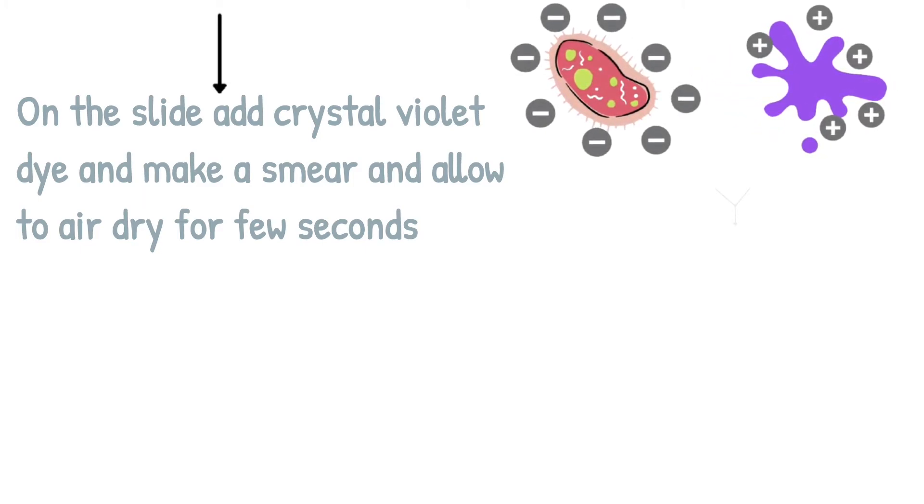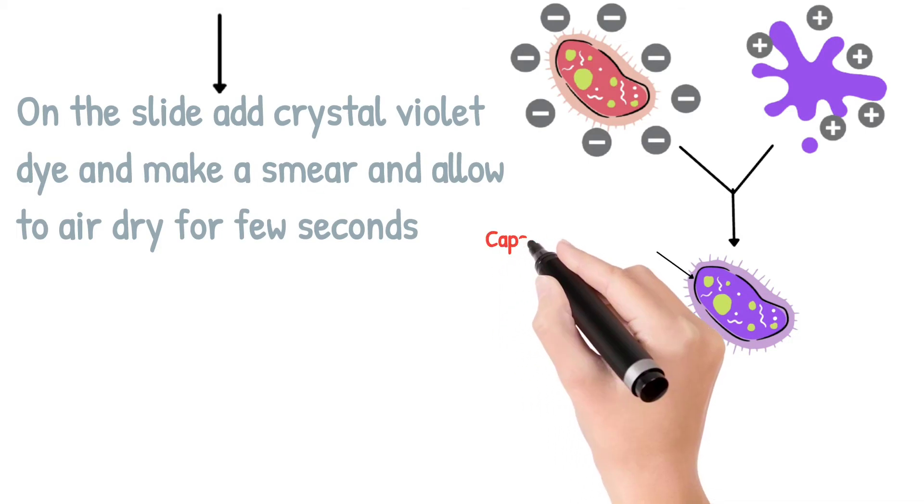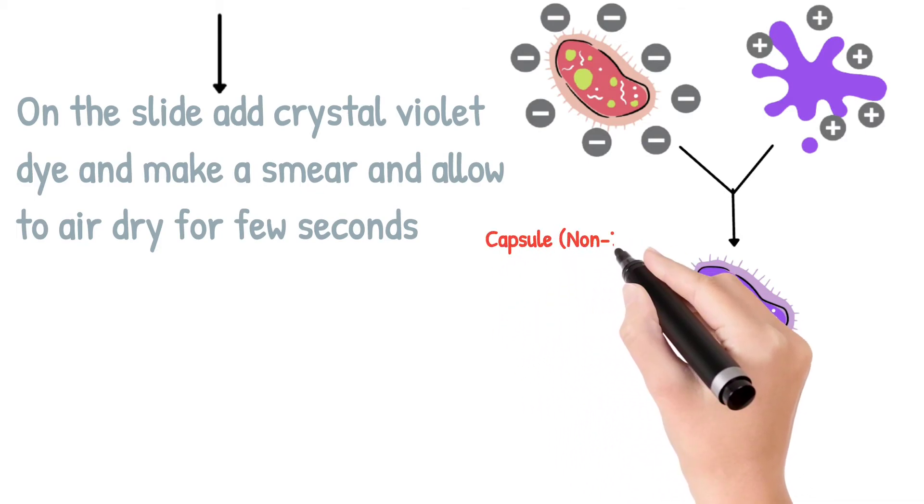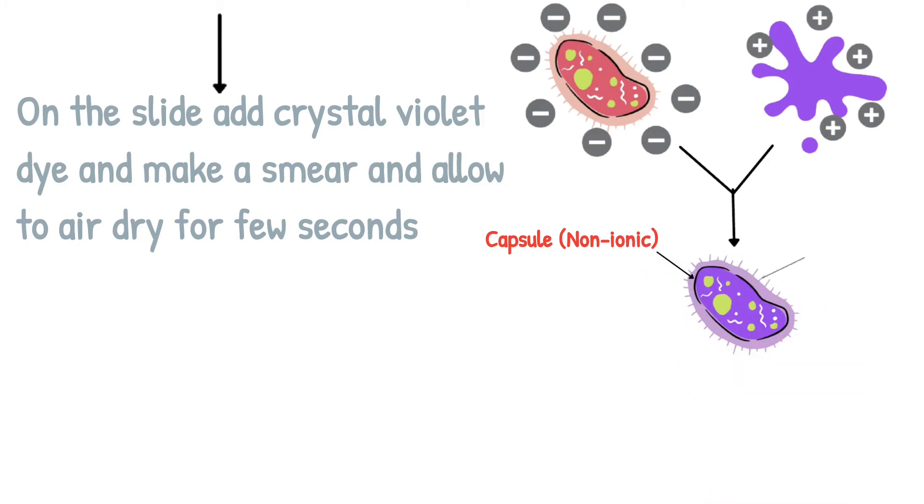Bacterial cell walls are negatively charged, and crystal violet is a basic dye that is positively charged. It makes a stronger bond and retains the violet color. When crystal violet is added, both the cell wall and capsule are stained. However, due to the non-ionic nature of the capsule, it has very little affinity with the dye.